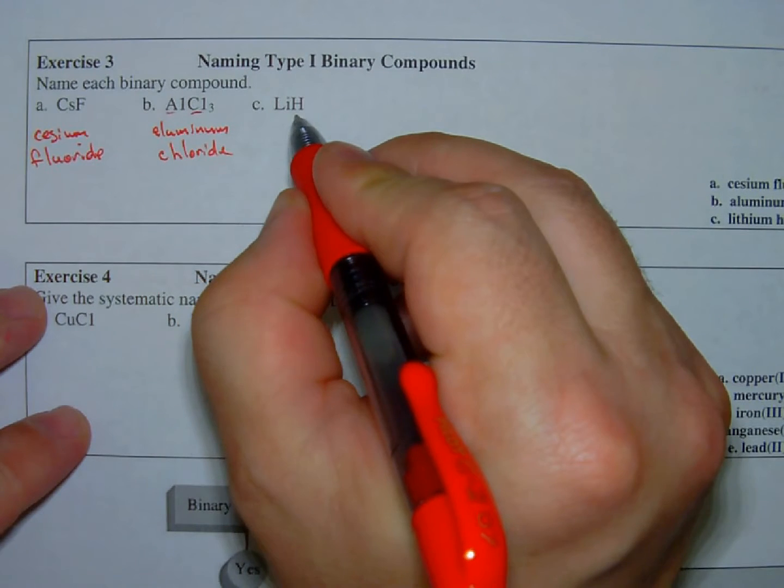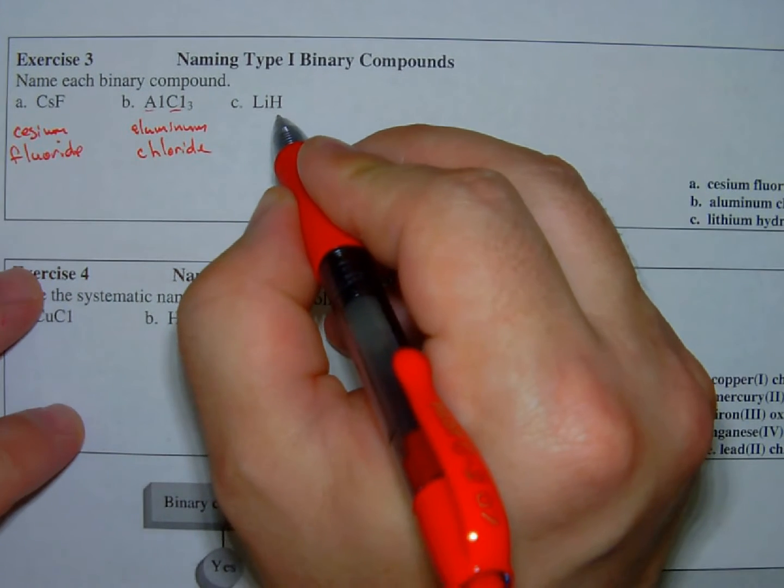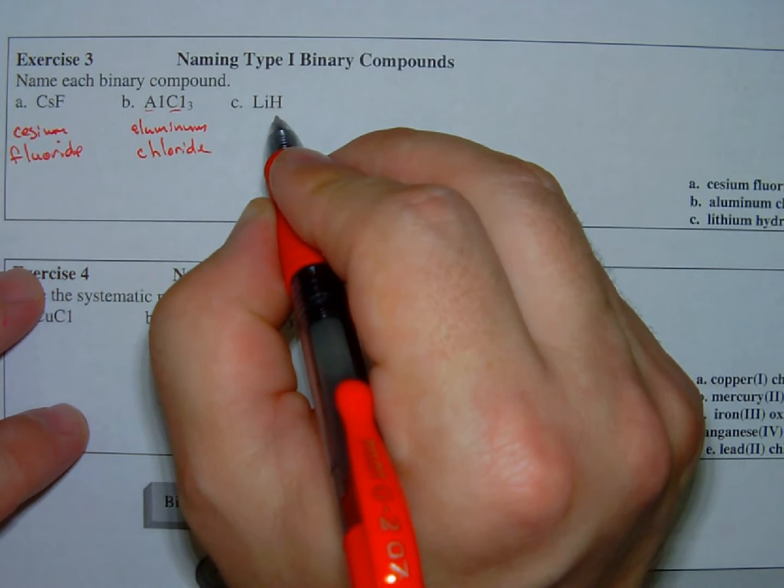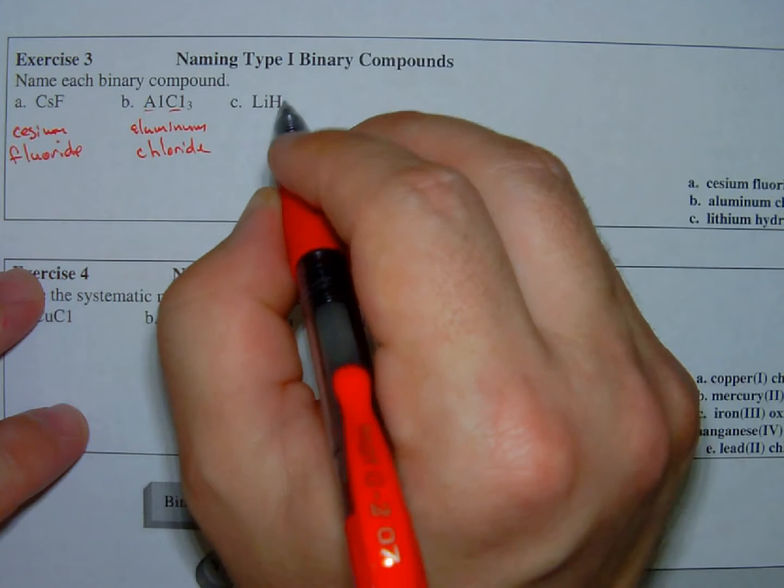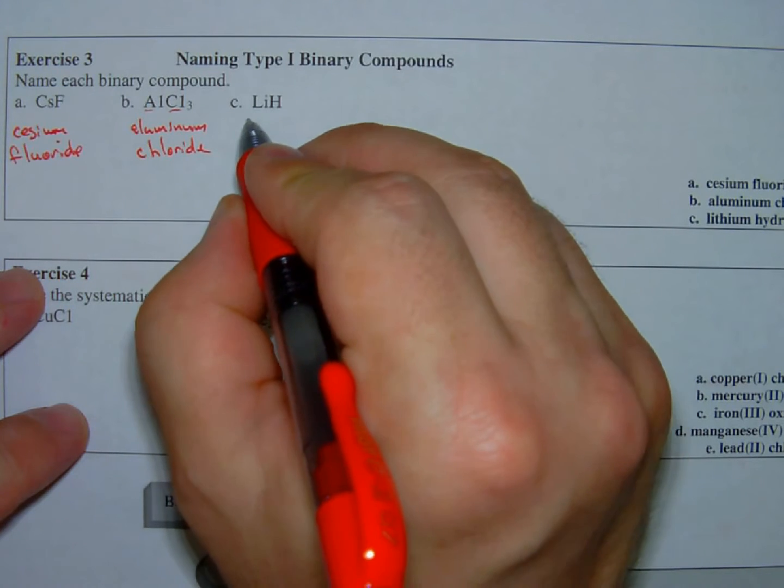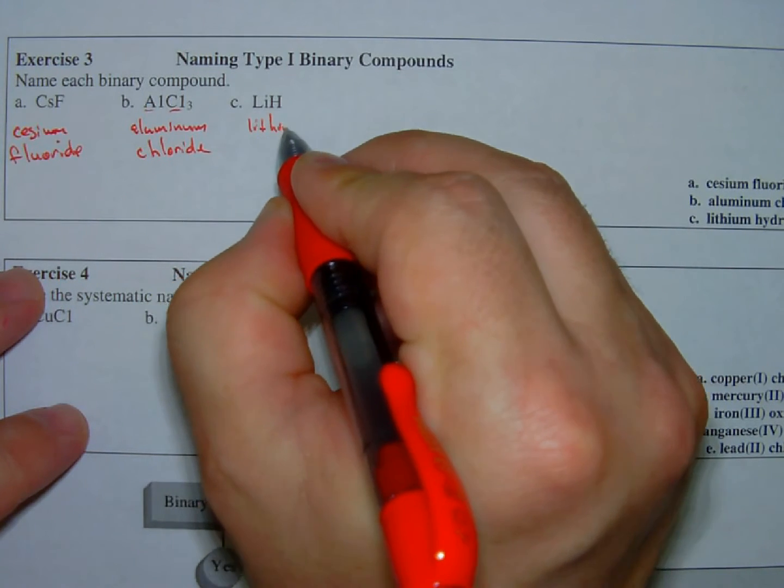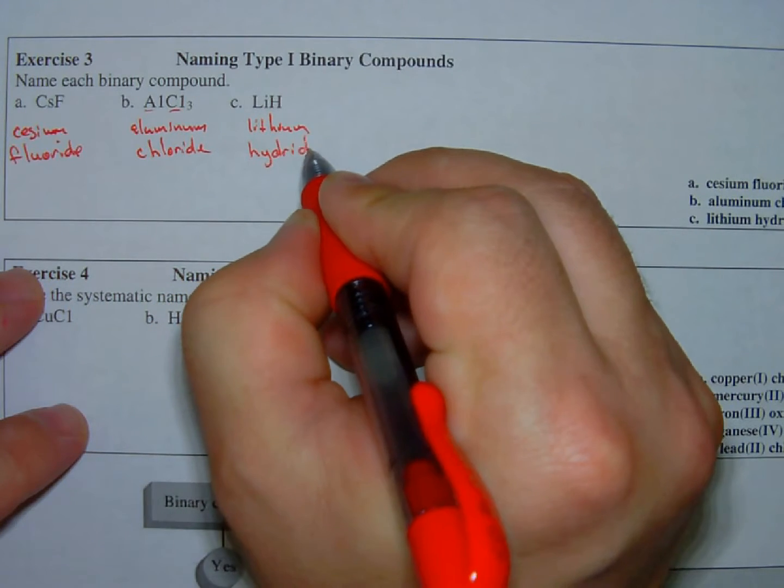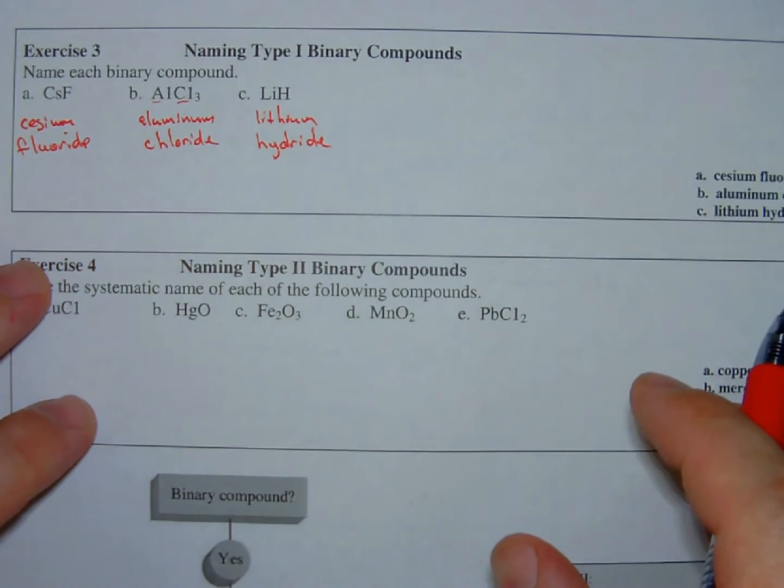We have lithium, and this is hydrogen, but the hydrogen has ionized as a negative charge, even though most of the time we deal with this as a positive charge. Because it's a negative charge, I say hydride, lithium hydride.